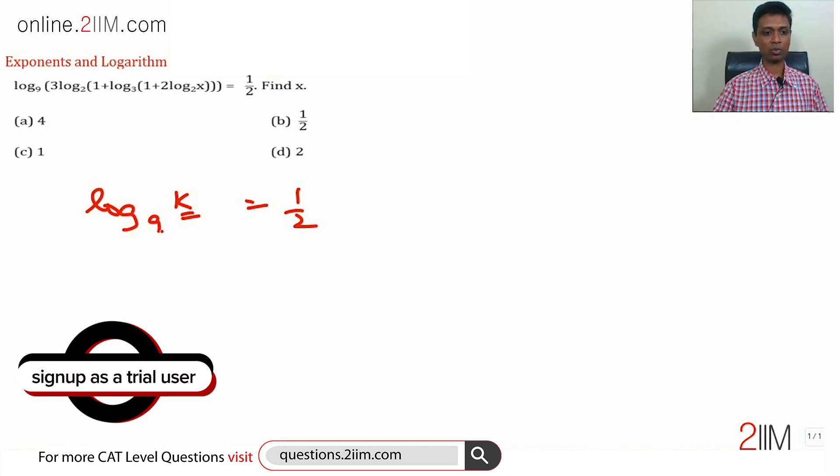9 power 1 by 2 is 3, so this question practically now simplifies to 3 log 2 to the base 1 plus log to the base 2 log to the base 3 of 2 log x to the base 2.